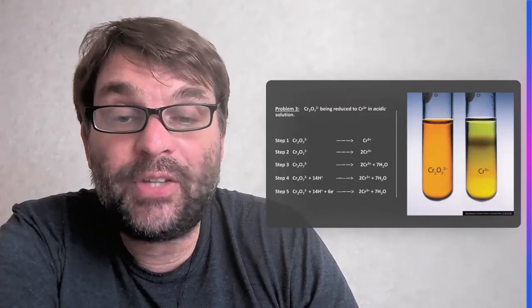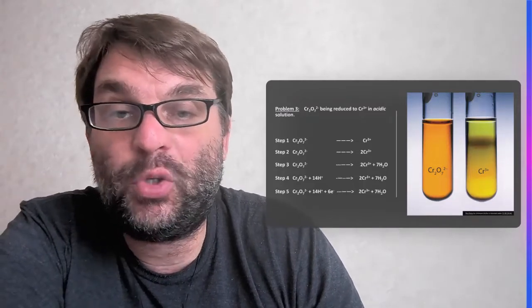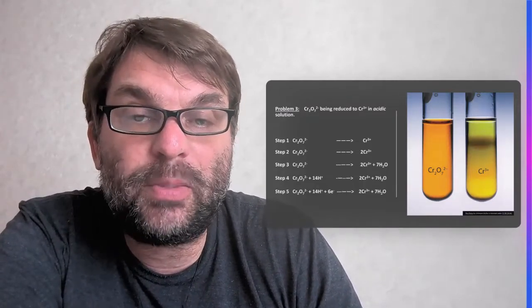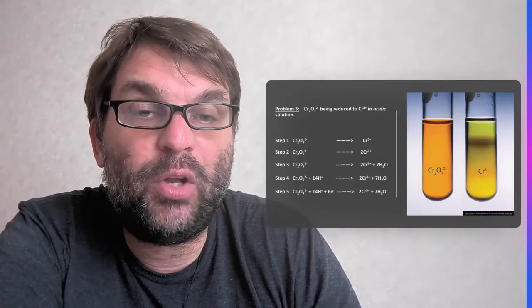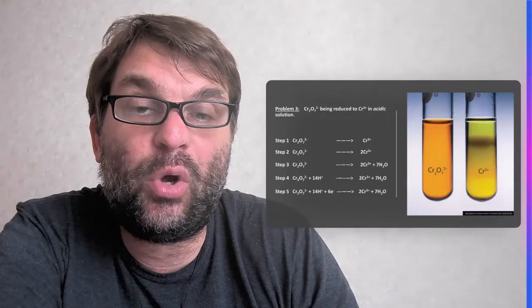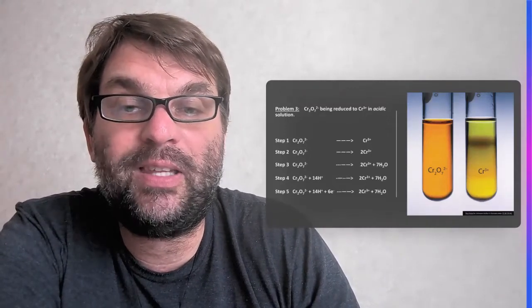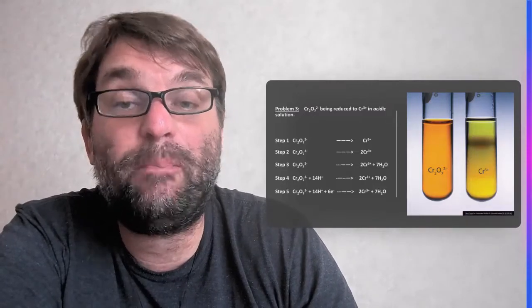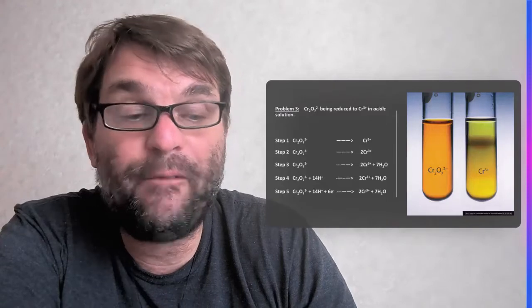Then again, the last thing we have to do is then balance the charge, just like before in the two examples. So we've got 2 minus plus 14 H+ is 12 plus. And then we only got 6 plus, 2 times 3 plus on the right-hand side, so you've got to add 6 electrons, so both sides, 6 electrons on the left-hand side, so both sides now have 6 plus charge, and that's balancing half equations.